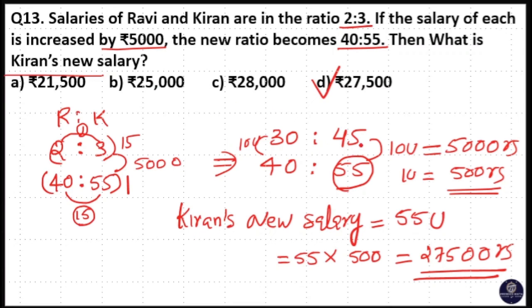What was Kiran's first salary? 45 unit. 45 into 500 is Kiran's first salary. Don't need to do that because 27,500 is the final salary. So reduce 5000 from it. That will be 45 unit.